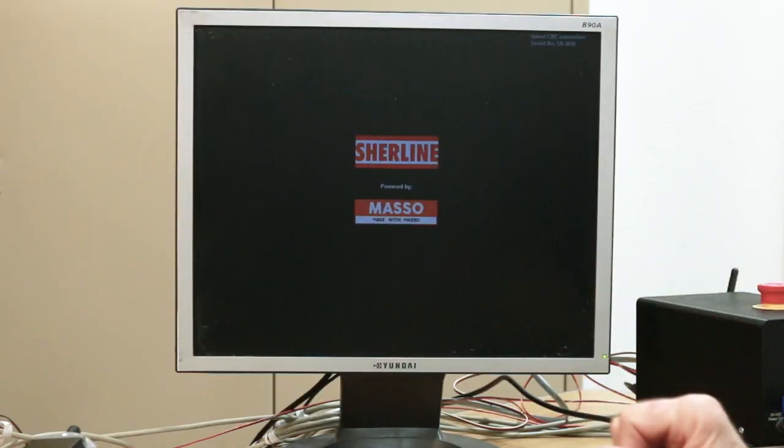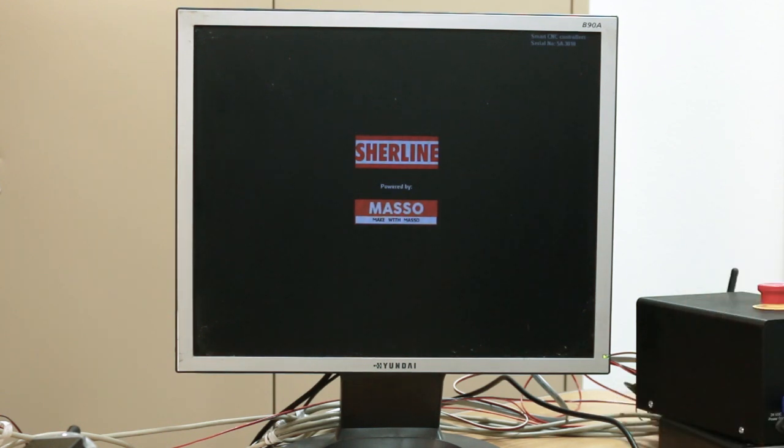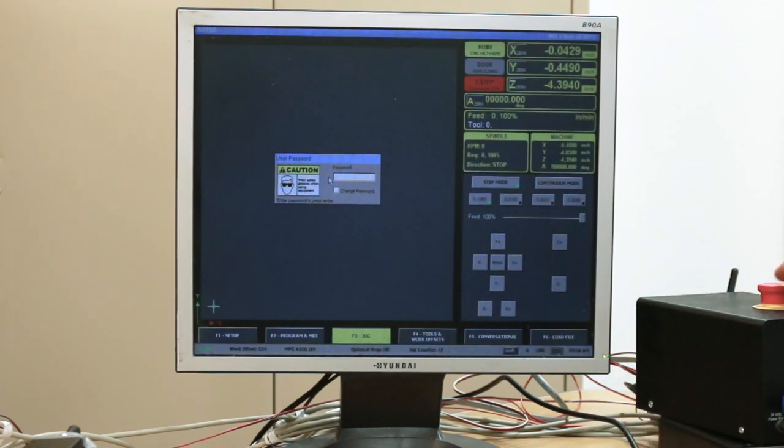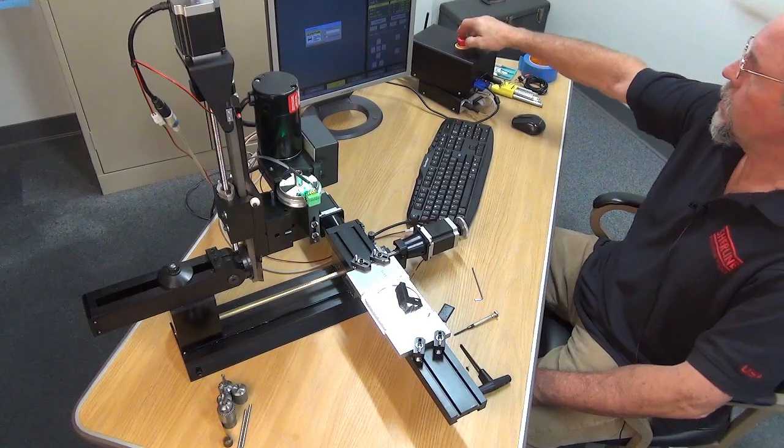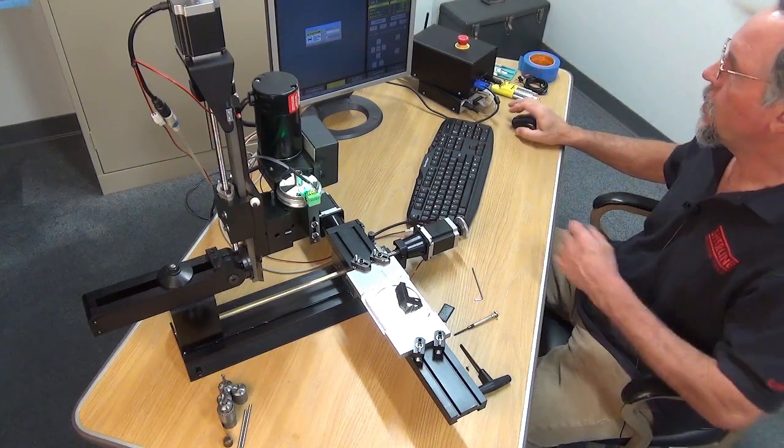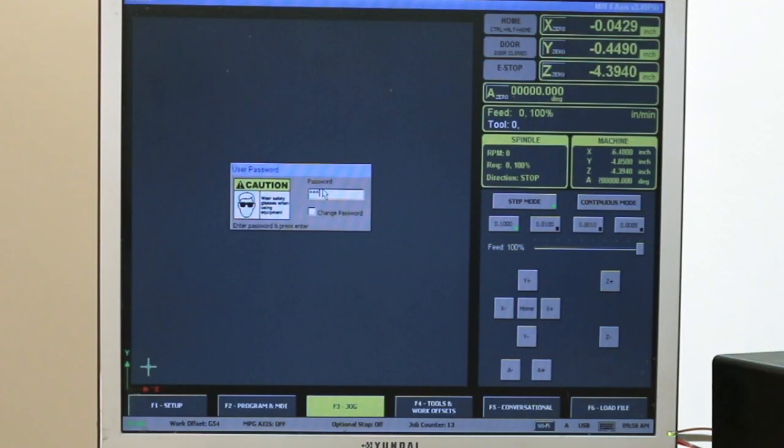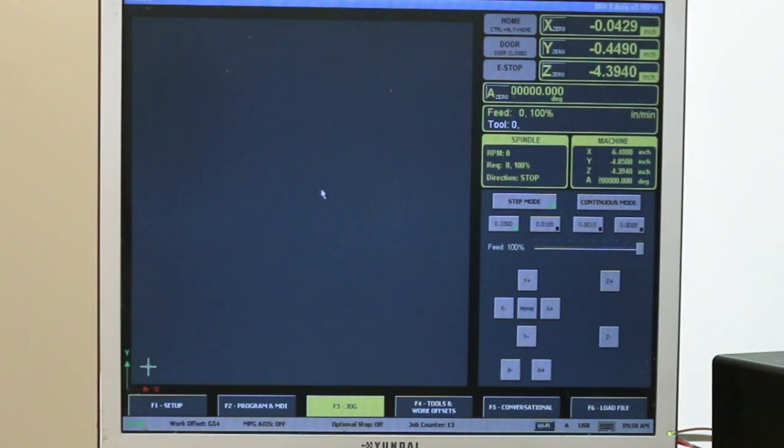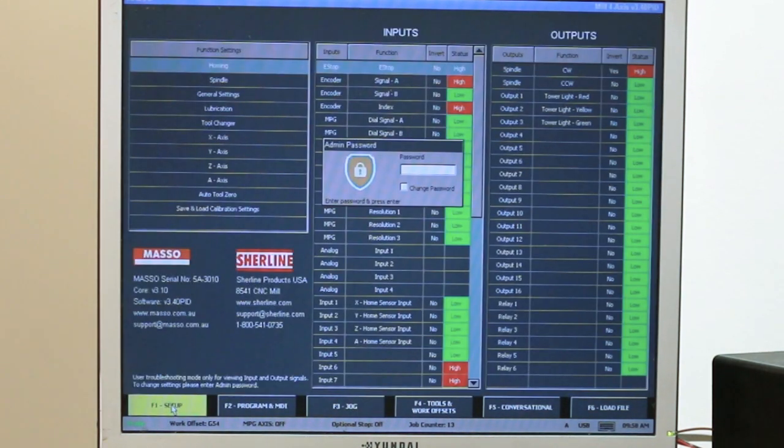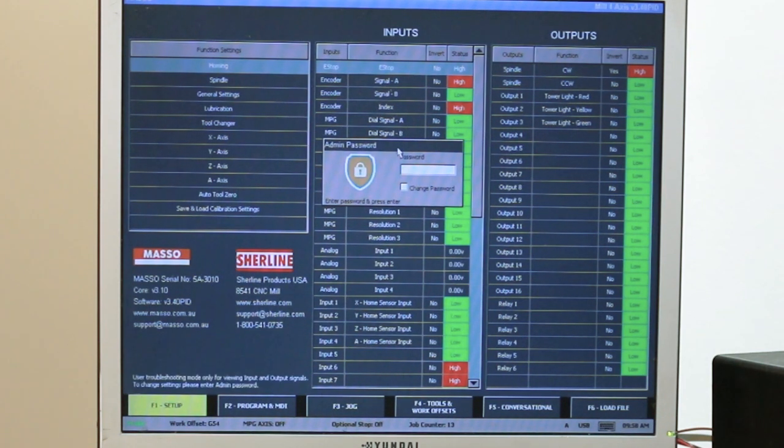The master control will come up. Password in. For this, I don't have to home anything out. What I'm going to do is go to the F1 setup screen. I'm going to click on that. I don't need to put a password in here either. Let me just move this out of the way.